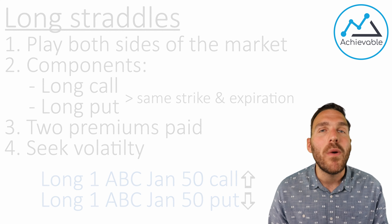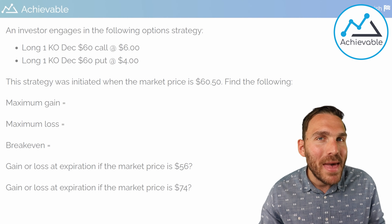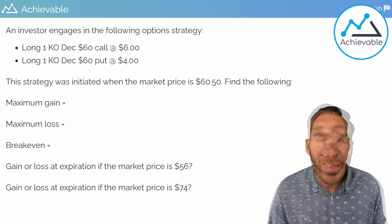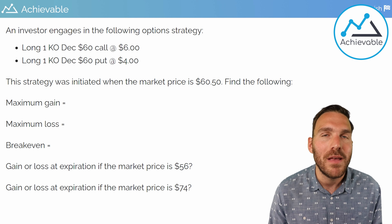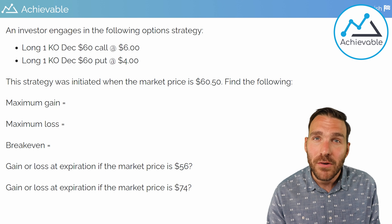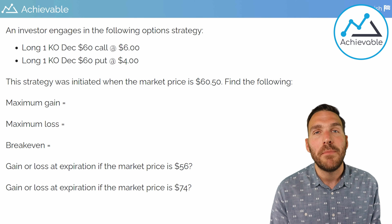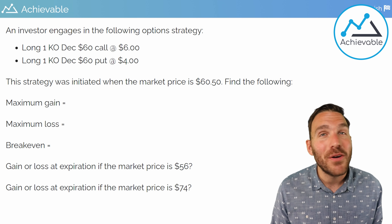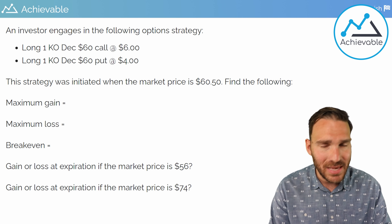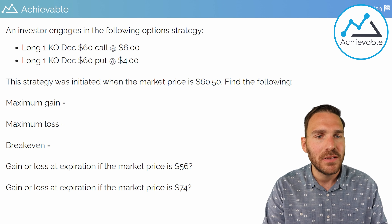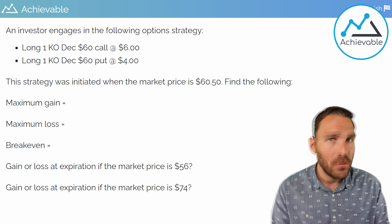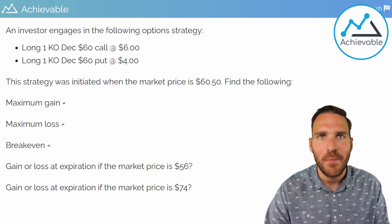Let's work through a practice question with multiple sub-questions embedded in it. Go ahead and pause the video to see if you can answer the five questions based on this long straddle. We have a long KO December 60 call at 6 and a long KO December 60 put at 4. First thing to establish: this is a long straddle — long call, long put, same strike price, same expiration.